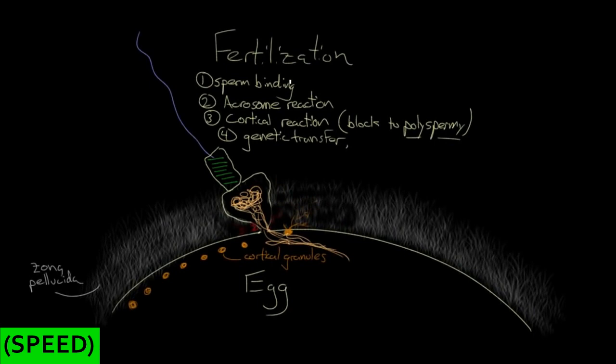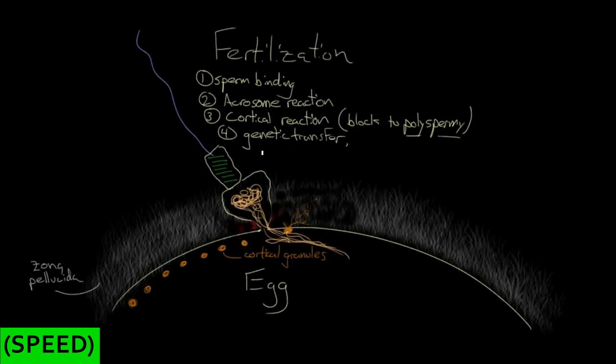The process of egg meeting sperm itself is called fertilization. Sperm binds to the zona pellucida of the glycoproteins. You have an acrosomal reaction. Then a cortical reaction prevents more than one sperm getting in. And then the genetic material of the sperm is transferred. Now you'll notice that I drew the genetic material from the nucleus coming in.